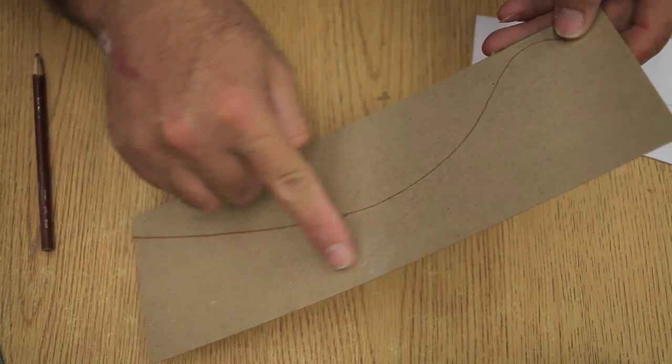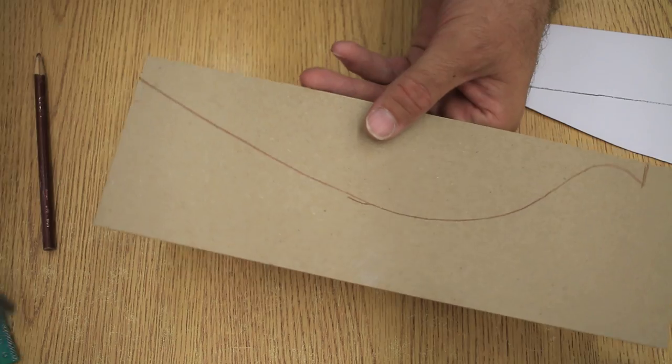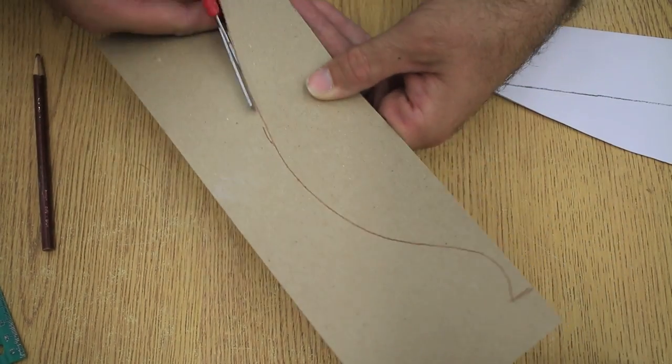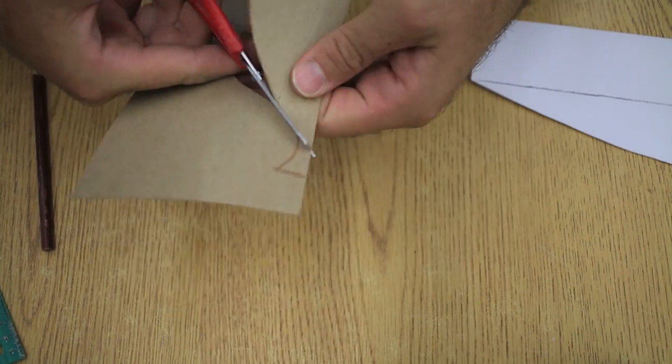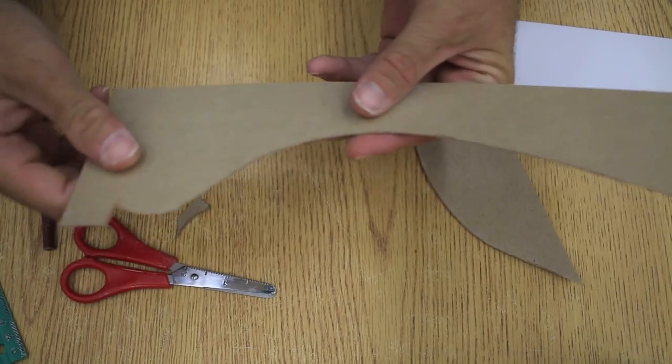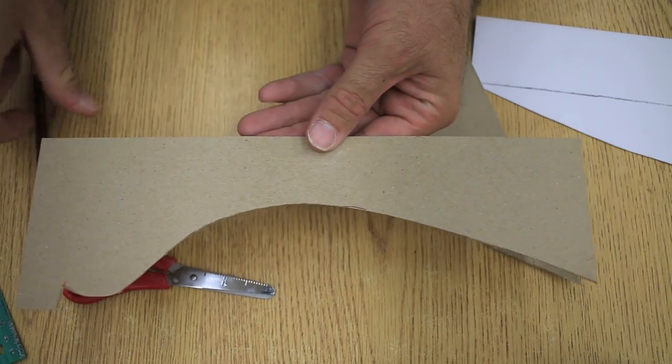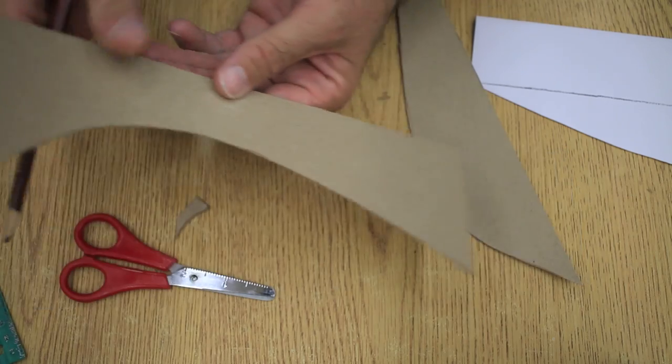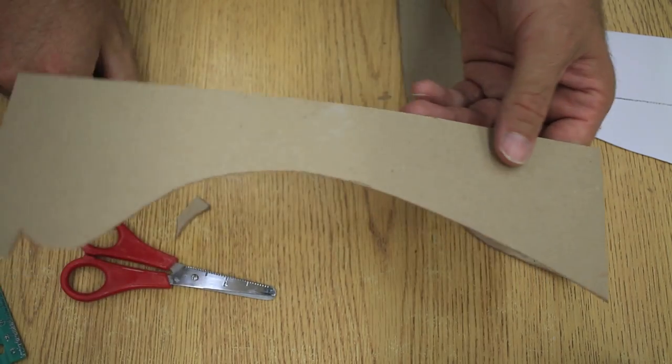So this is going to be our template. Now this negative shape is the part we want to keep. And we're going to use that to help us guide the coils.